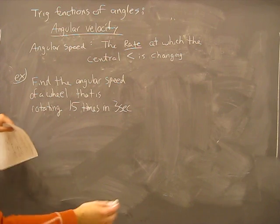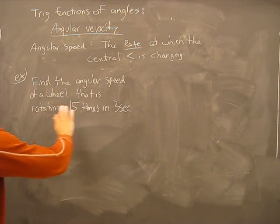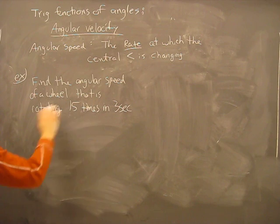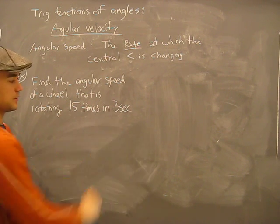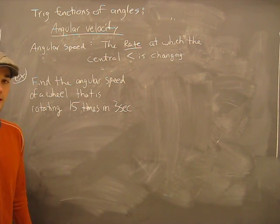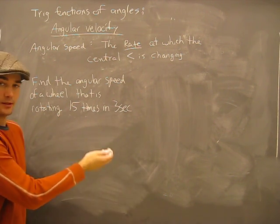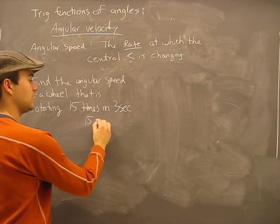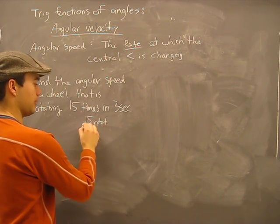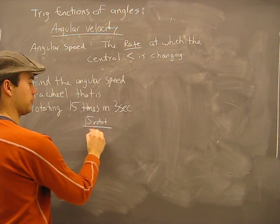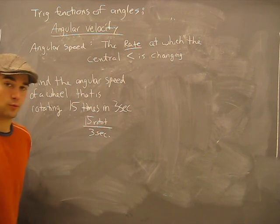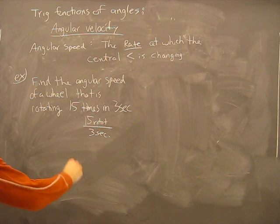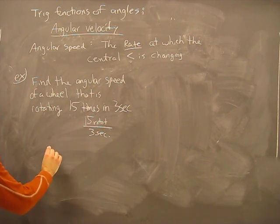So here's a question: find the angular speed — so it's going to be a rate — of a wheel that is rotating fifteen times in three seconds. It actually tells us what the rate is. We have fifteen rotations per three seconds. Could it be any more simple? Not really.